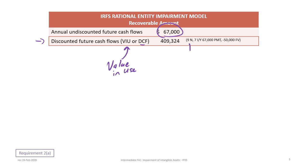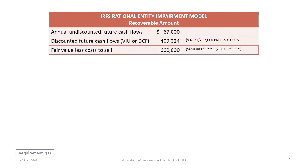To calculate value in use, we have nine years at a discount rate of 7%. We take our $67,000 and enter that as a payment. The costs to dispose or sell at the end of the useful life are entered as a negative $50,000 FV. We determine our present value to be $409,324. The fair value is $650,000 and the cost to sell are $50,000, so fair value less cost to sell is $600,000.